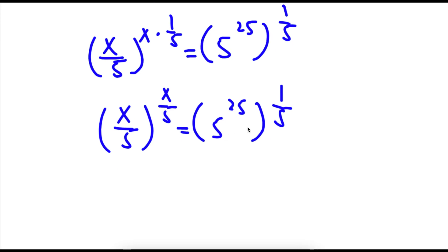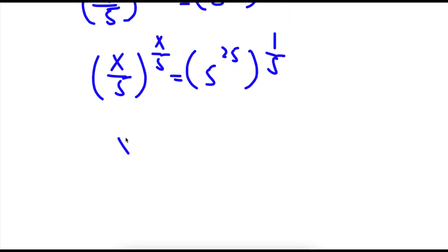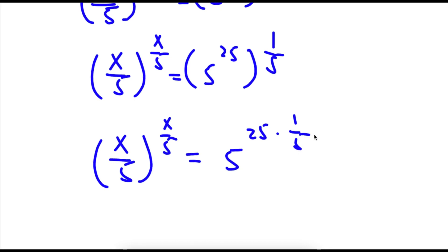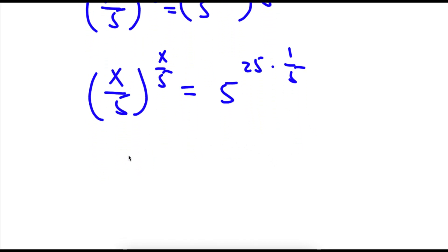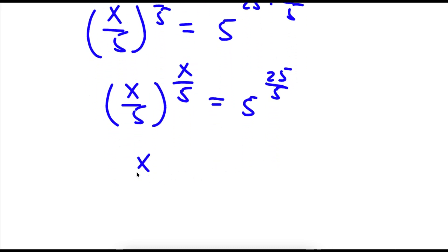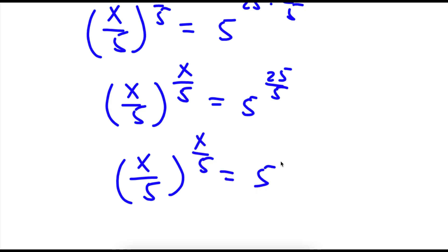Now I'm going to do the same thing to 5 to the power of 25 to the power of 1 over 5. So now I have x over 5 to the power of x over 5 is equal to 5 to the power of 25 over 5. Now I have x over 5 to the power of x over 5 is equal to 5 to the power of 5, because 25 over 5 is 5.